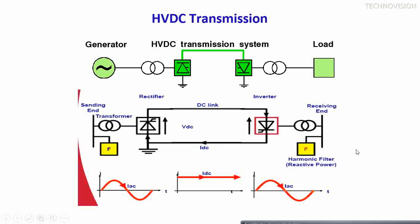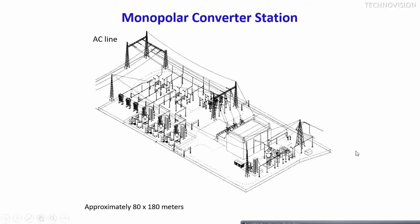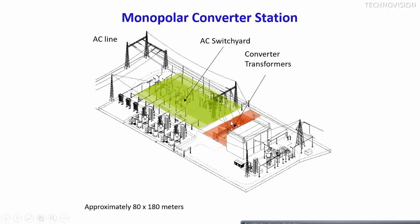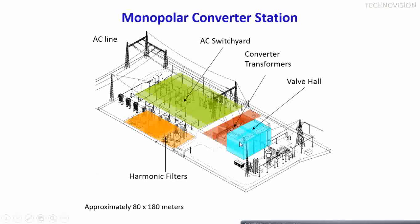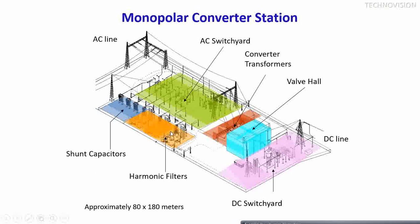A typical monopole converter station has an AC switchyard, converter transformers, and thyristor valves — an indoor structure where valves are suspended or hanging from the ceiling. In recent projects outdoor valves are used, placed on the ground. Harmonic filters and shunt capacitors are provided for additional reactive power supply.